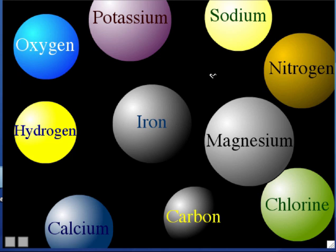Notice that all atomic symbols are one or two letters — some are a single letter and some are two letters. The atomic symbol is always one or two letters. If it's just a single letter, it's always a capital letter. And if it's two letters, the first one is capital and the second one is always lowercase.